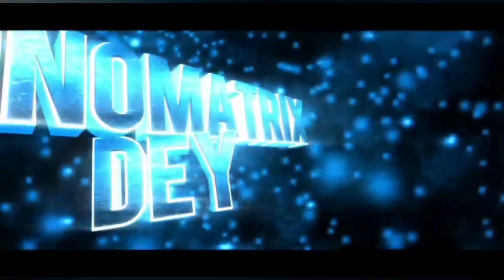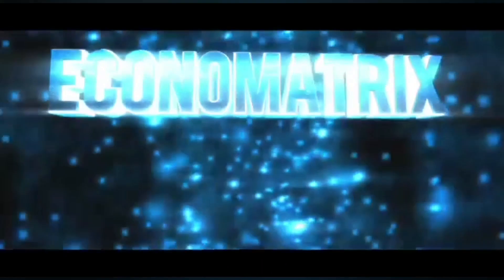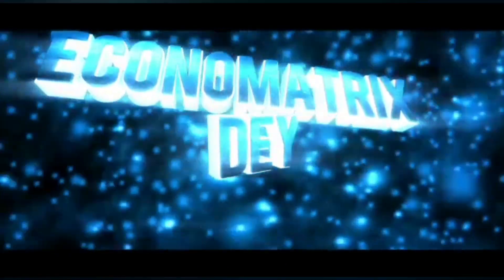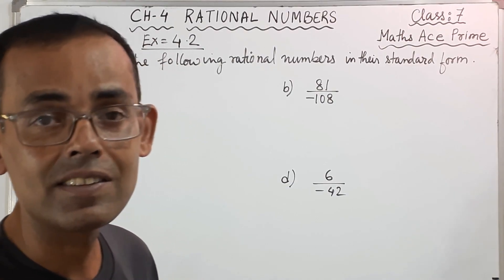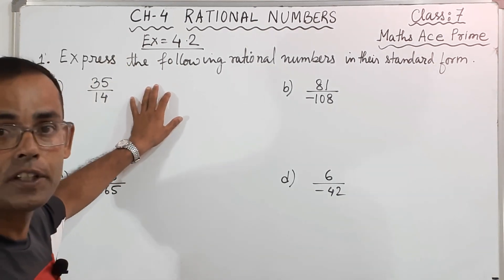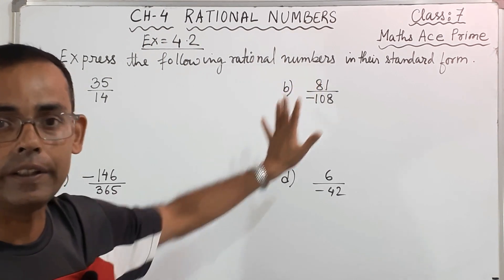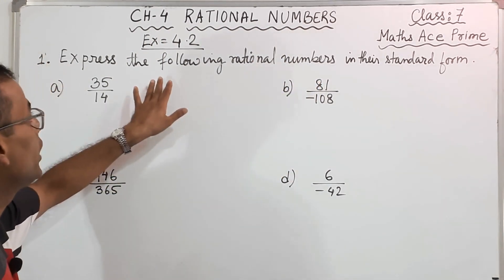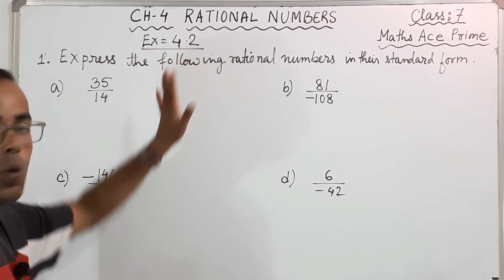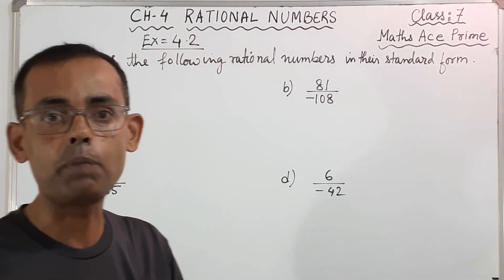Hi everyone, I, Shurujit, welcome you all on Economatrix Day channel. Today we are going to learn Class 7 Mathematics. So let's start today's class. Today Class 7 students, we are again going to continue with Chapter 4 Rational Numbers. And we are going to today solve Exercise 4.2. And today's part is Part 3.